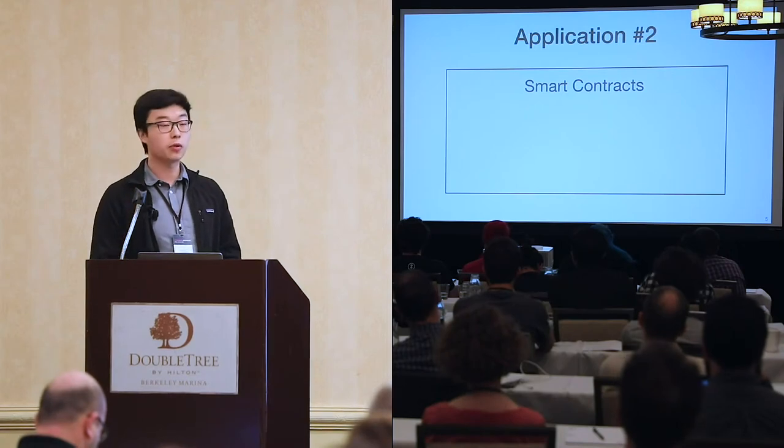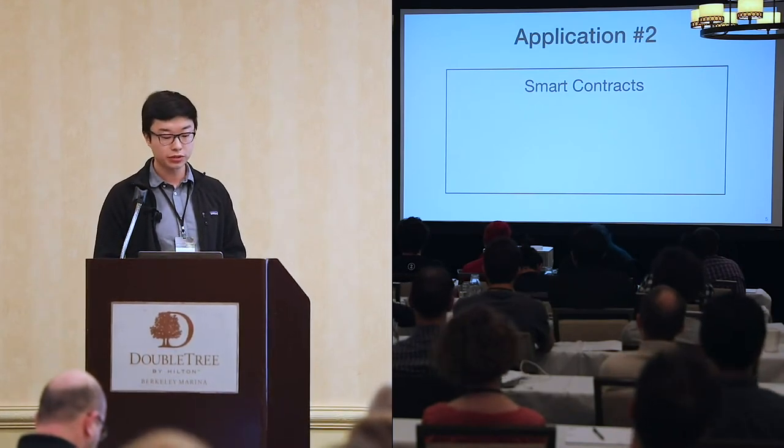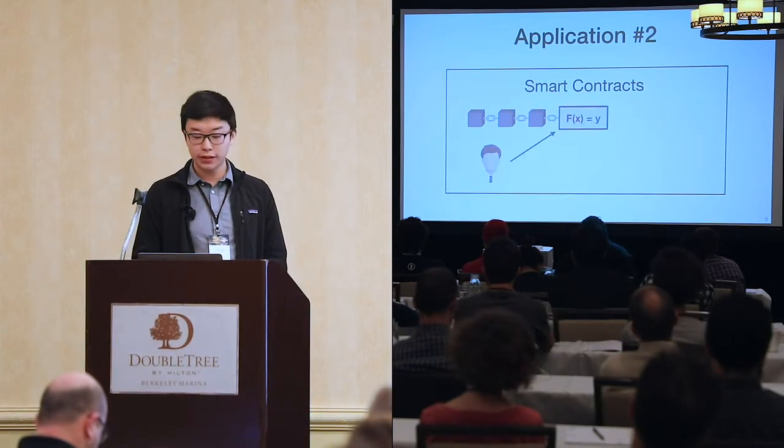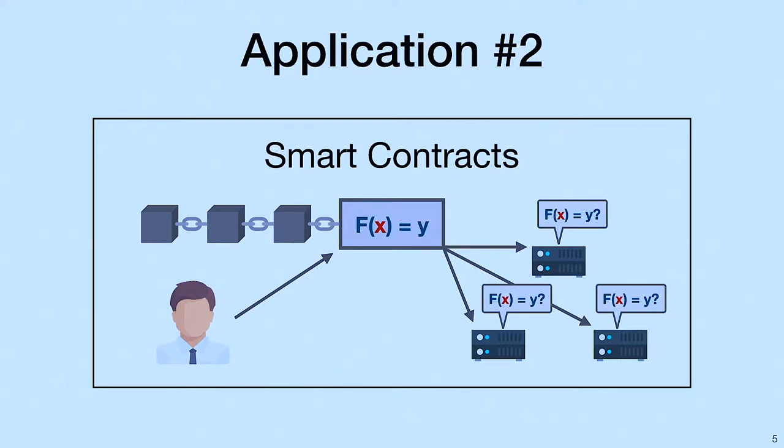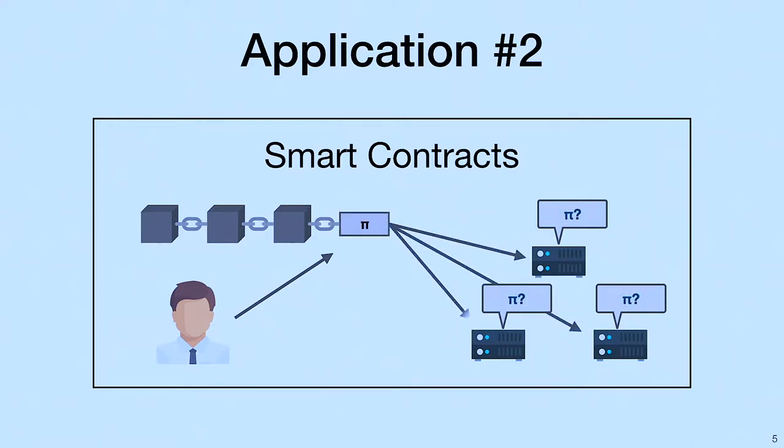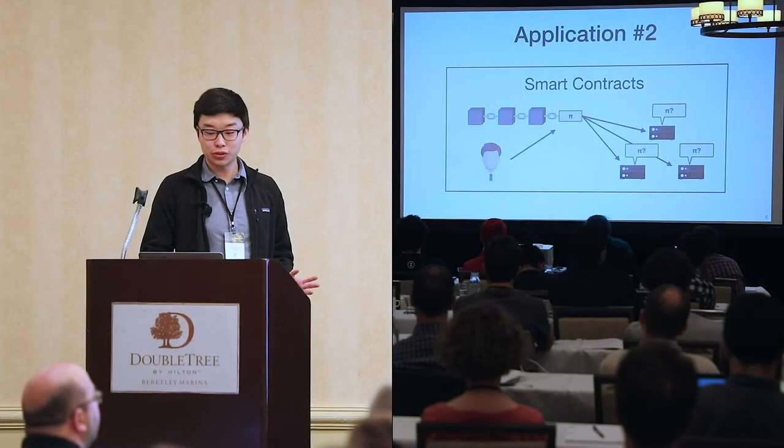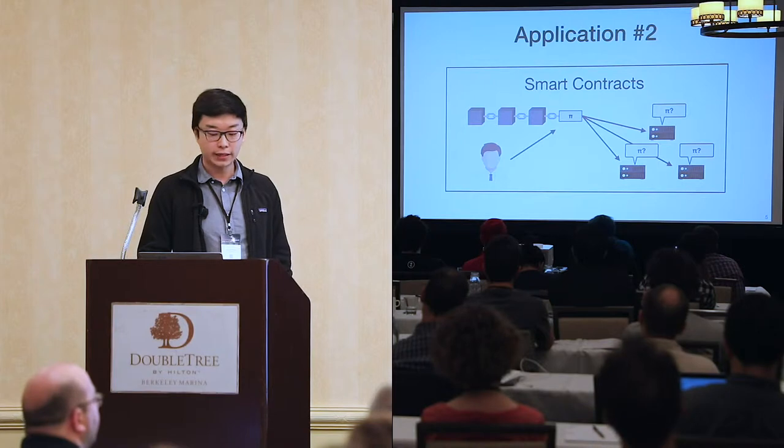Let's look at a second application. Suppose you wanted to use a smart contract to run a publicly verifiable computation. Today, invoking the smart contract requires validators to rerun the computation. A more scalable approach is for the caller to run the computation off-chain, sending the result along with a proof, attesting to the validity of the result. This way, the validators would only need to check the proof, which we've established is cheap. These two applications were chosen specifically to motivate our problem.